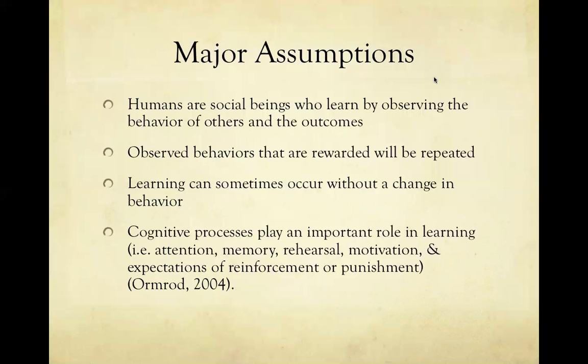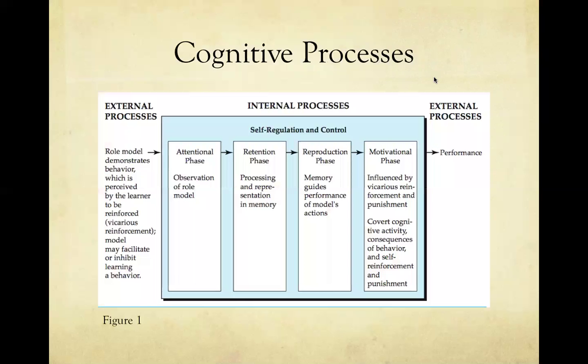The major assumptions of this theory are that humans are social beings who learn by observing the behavior of others and the outcomes, observed behaviors that are rewarded will be repeated, learning can sometimes occur without a change in behavior, and lastly that cognitive processes play an important role in learning — that is, attention, memory, rehearsal, motivation, and expectations of reinforcement or punishment.